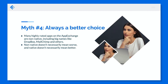The fourth myth is that native apps are always going to be a better choice. What you might not know is that many highly rated apps on the AppExchange are non-native, including big names like Dropbox, MailChimp, and others. Non-native doesn't necessarily mean worse, and conversely, native doesn't necessarily mean better.